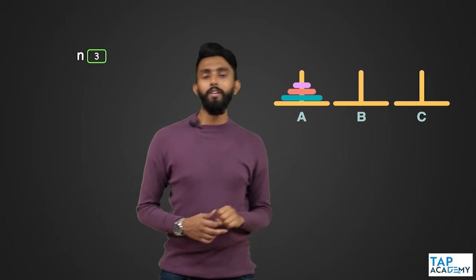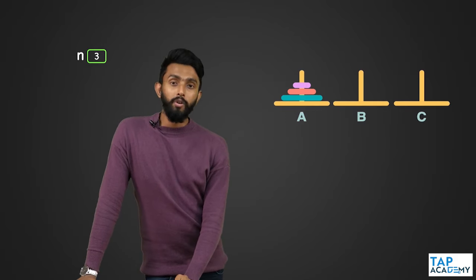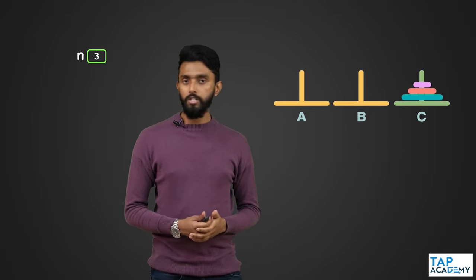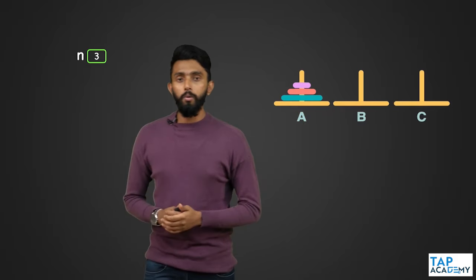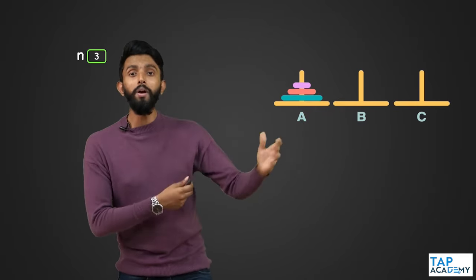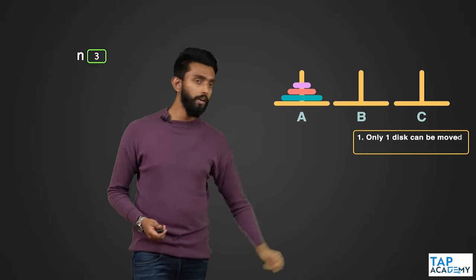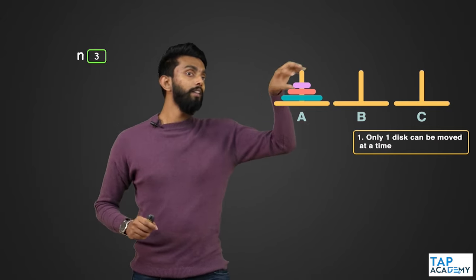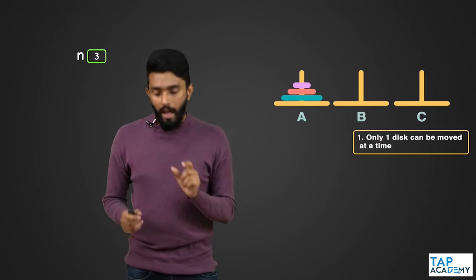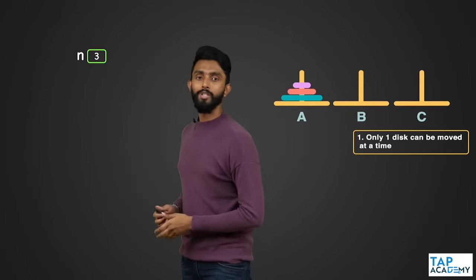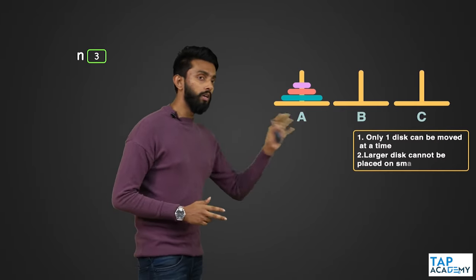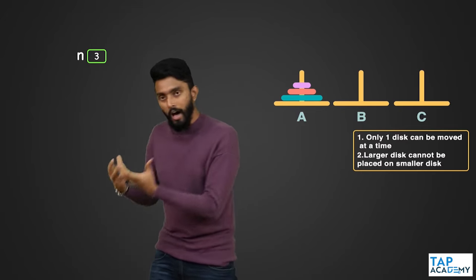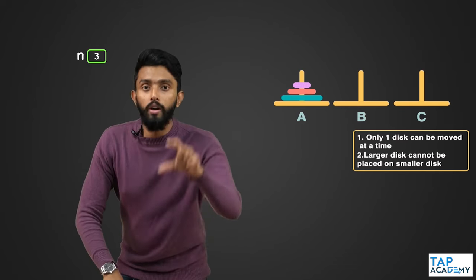You may say it's very simple — just take the three discs and put them there. But it's not as simple as that; there are certain rules. Rule number one: only one disc can be moved at any given point of time. I cannot take two or three discs and move them together. Rule number two: a larger disc cannot be placed on a smaller disc — only a smaller disc can be placed on a larger disc.